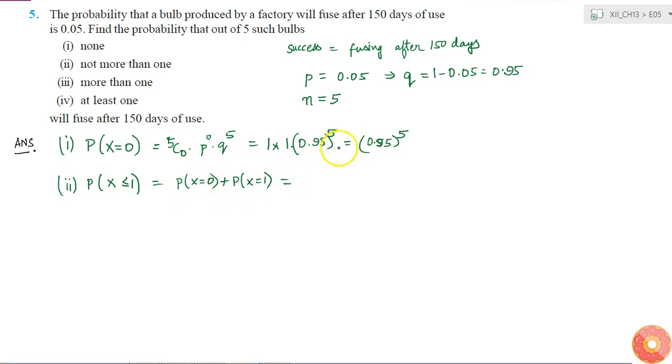This is equal to 0.95 to the power of 5, and for x equal to 1 it will be 5C1 into p to the power 1 into q to the power 4. This is equal to 0.95 to the power 5 plus 5 into 0.05 into 0.95 to the power 4. This I can write as 0.95 to the power 4 into 0.95, and here if I take common I will get plus 5 into 0.05 which is 0.25. This is equal to 0.95 to the power of 4 into 1.45.